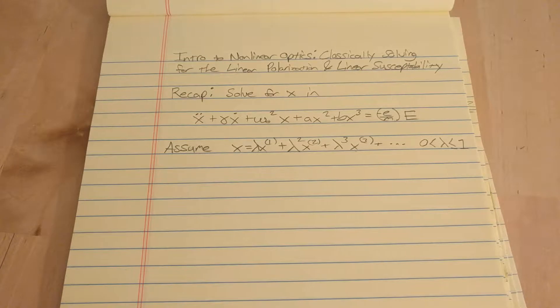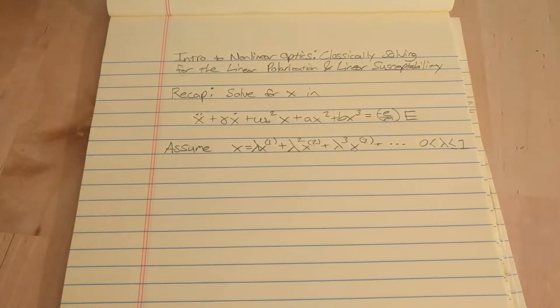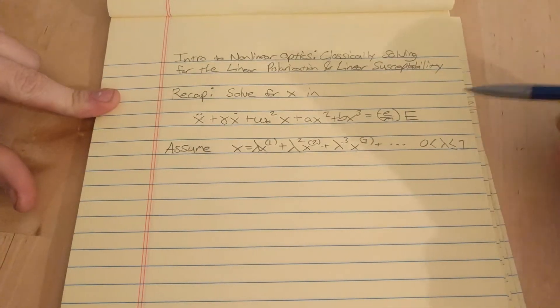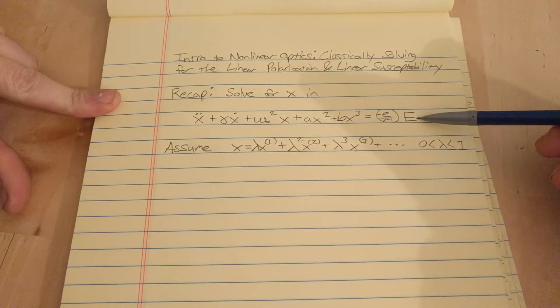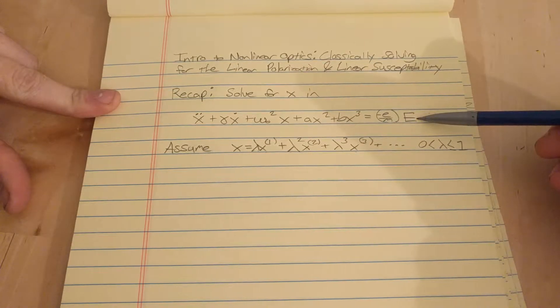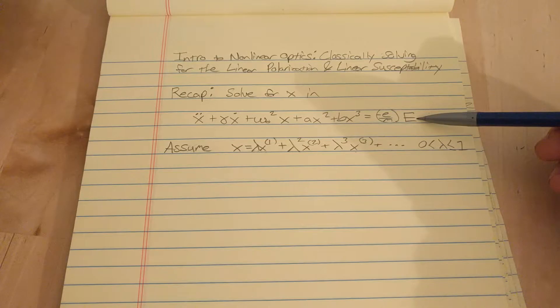This video is continuing from the last video and in this video, I'm actually going to start solving this equation here, which is the equation for Driven Damped Harmonic Oscillator, and it's an anaharmonic model of the Lorentz model for an atom.